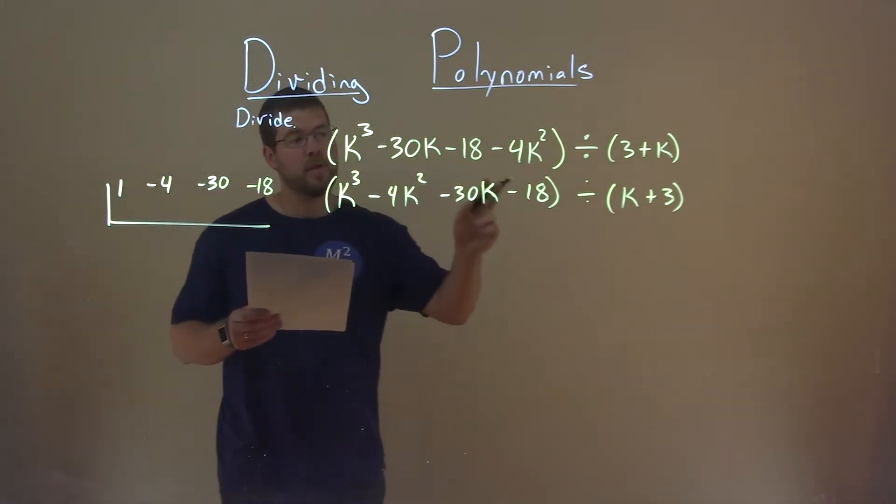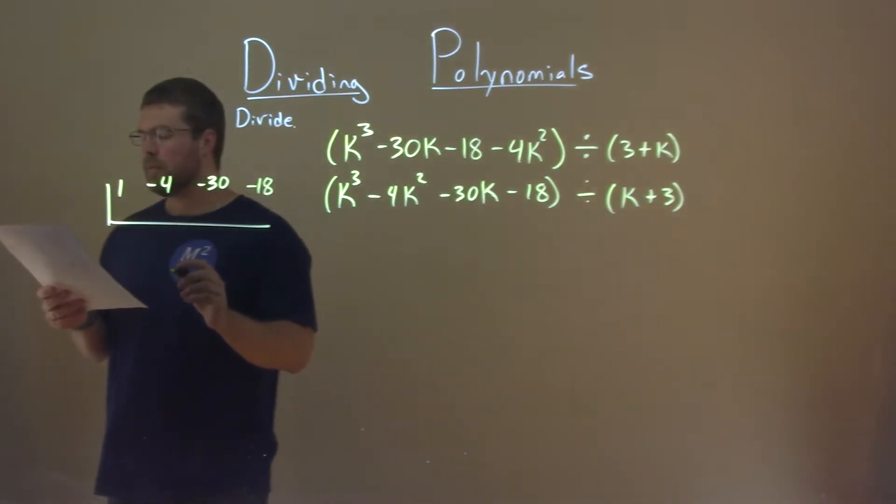We have a k plus 3. Opposite of plus 3 is a minus 3, so put a minus 3 right here.